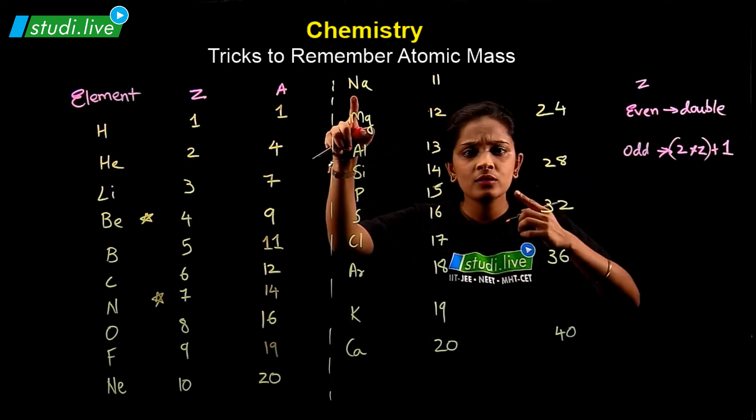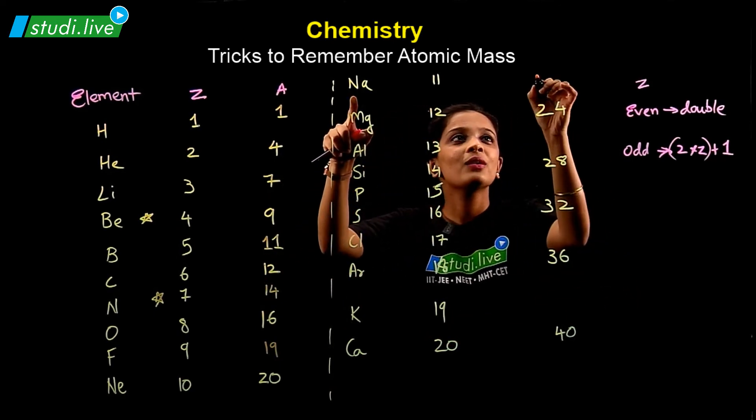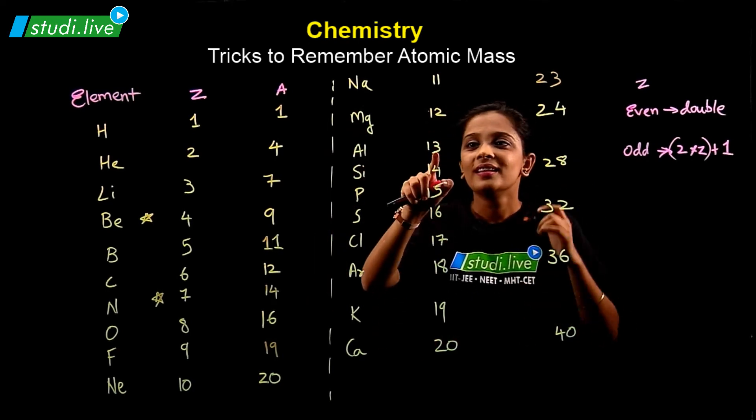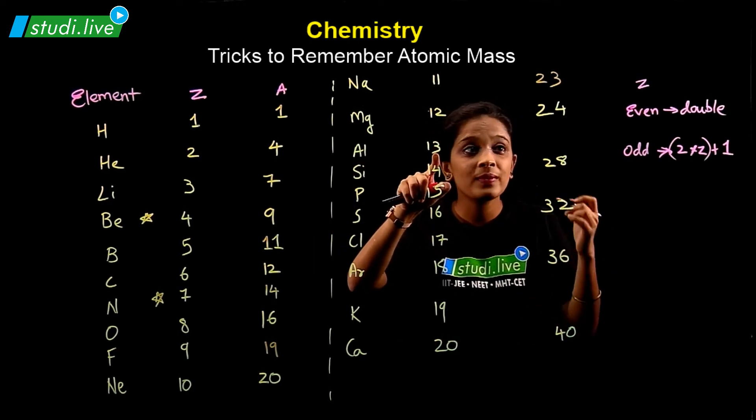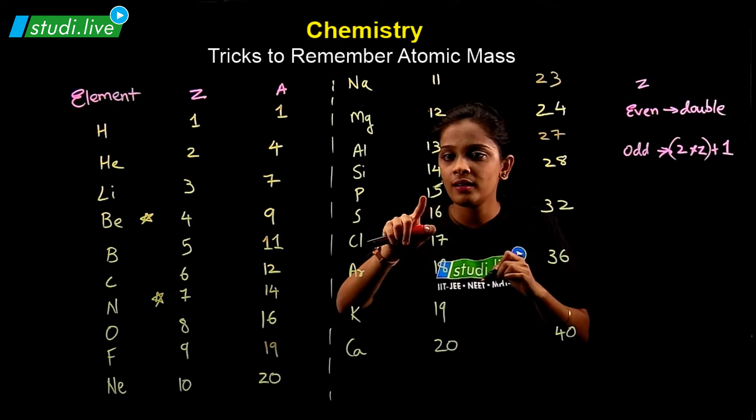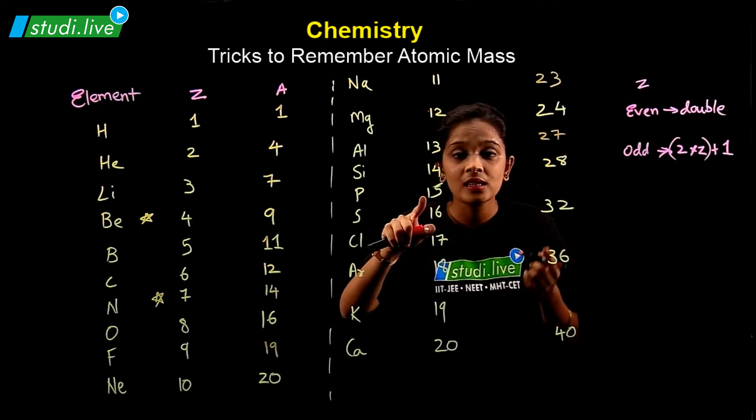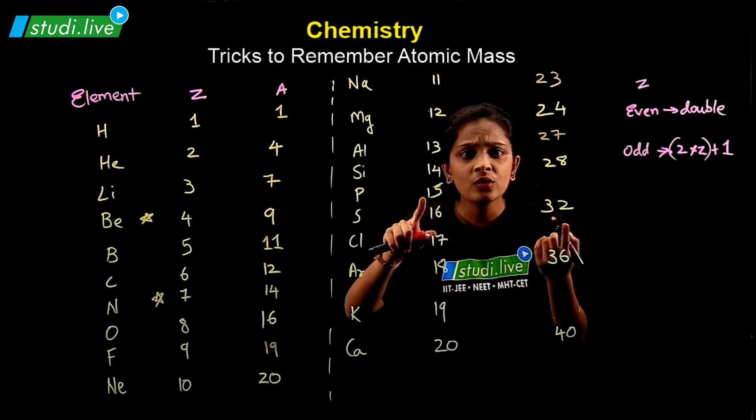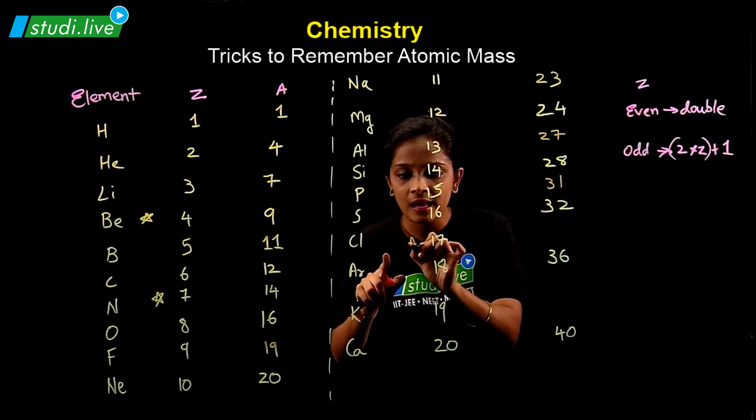Sodium, eleven twos are twenty-two plus one, twenty-three. You can do it by yourself now, don't you think so? So thirteen twos are twenty-six plus one, twenty-seven. Over here, what will be the case? So fifteen, thirty, thirty-one.